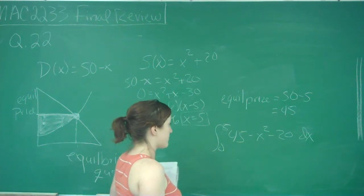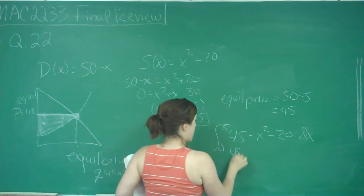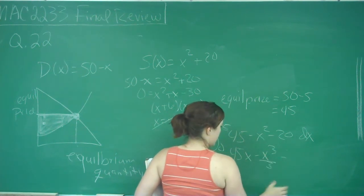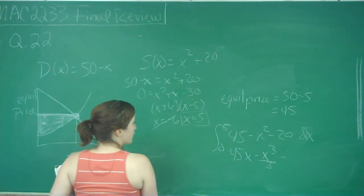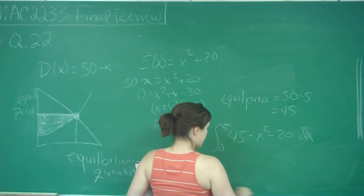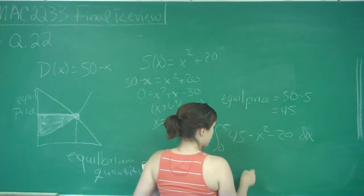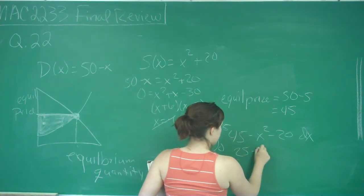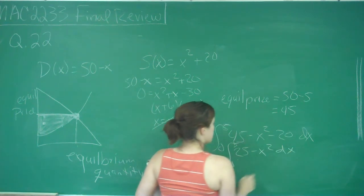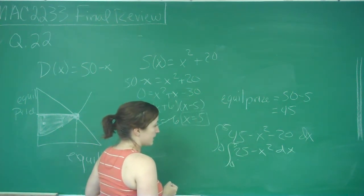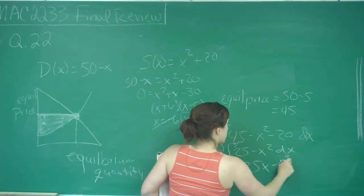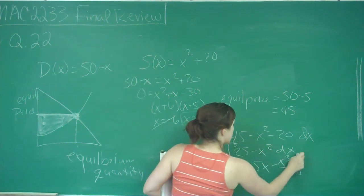Now I just take the derivative of that, and we can actually simplify it because we've got 45 minus 20 that's the same thing as 25 minus x squared. And now when we take the derivative we just get 25x minus x cubed over 3 from 0 to 5.